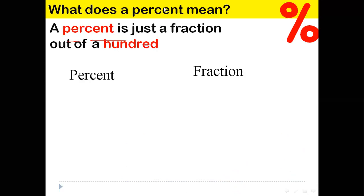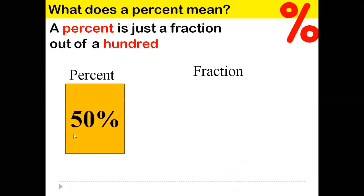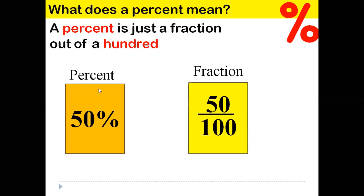A percent is just a fraction, but that fraction is unique — it is always over 100. That's the key idea of percent: it's a fraction with 100 in the denominator. So if you look at 50 percent, as a fraction it means 50 out of 100. We can write the percentage as a fraction over 100. You cannot choose another number for the denominator — it is always over 100. However, once you write the fraction, you can simplify it further.